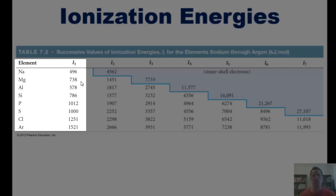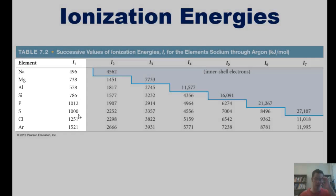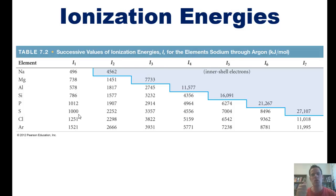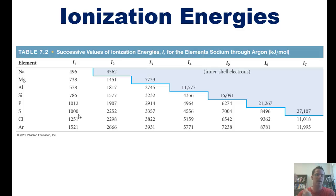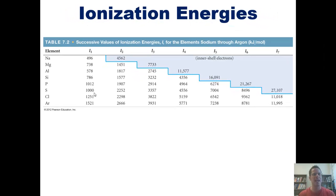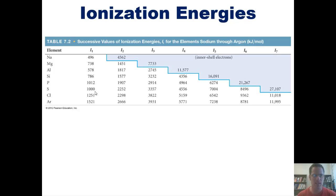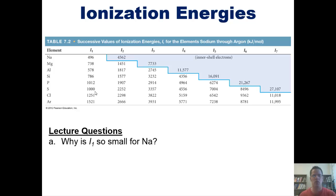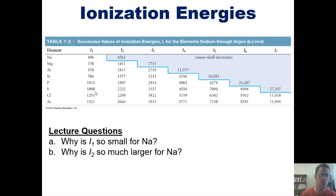As I go from sodium to magnesium, it becomes more difficult to remove an electron. There's an exception with aluminum, but then the trend continues from silicon to phosphorus and so forth. Why would it be harder to remove a first electron going across a row from left to right? The answer is because each element has one more proton in its nucleus, which means it hugs its valence electrons more tightly than its predecessor. Thought questions: Why is the first ionization energy so small for sodium? Why is the second ionization energy so much larger for sodium?